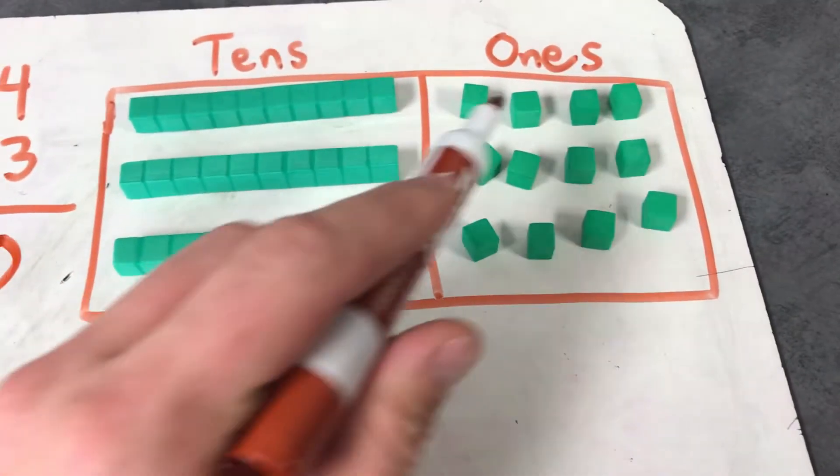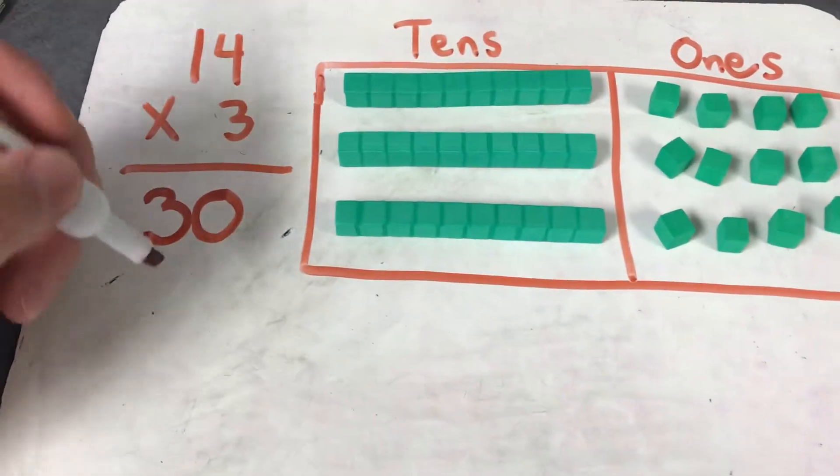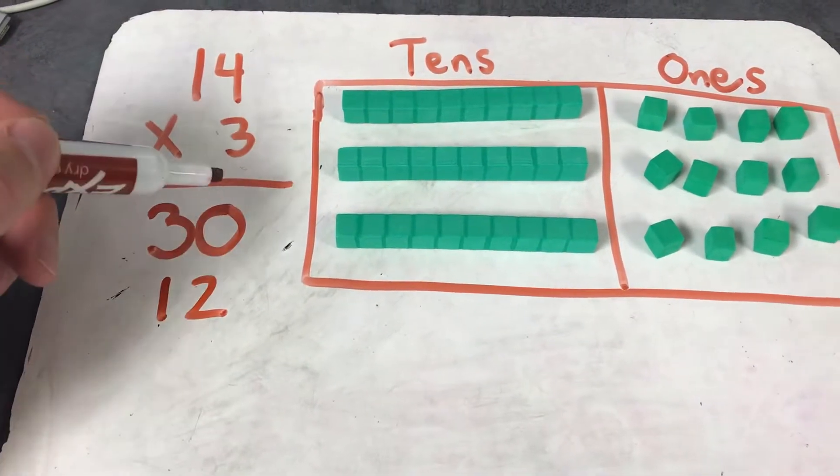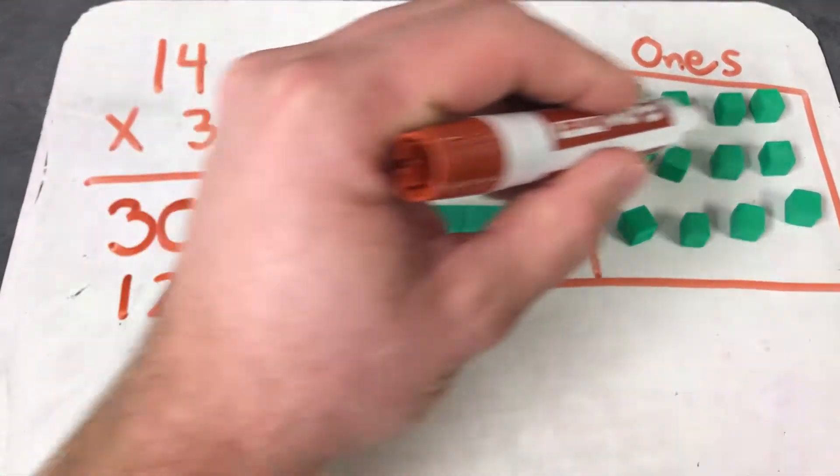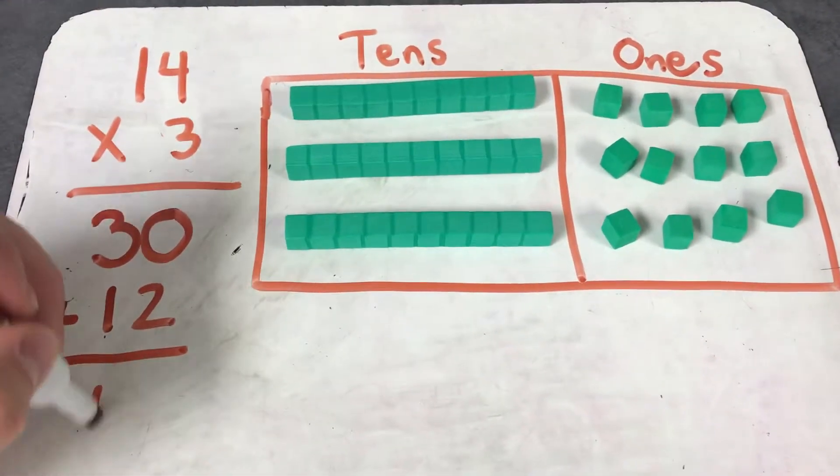If you look over at the ones, we have four, four, and four. We have four groups of three, and so four times three we know is twelve. So we took fourteen and we broke it apart into tens and ones. Now we just put them back together and we get forty-two.